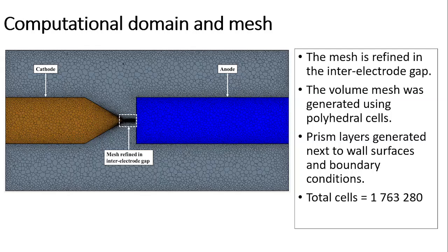The volume mesh was generated using polyhedral cells with prism layers generated next to wall surfaces and boundary conditions. The mesh contained more than 1.7 million cells.